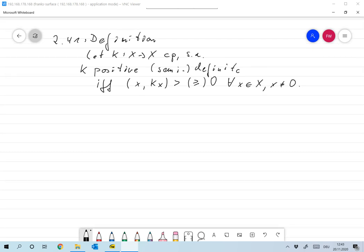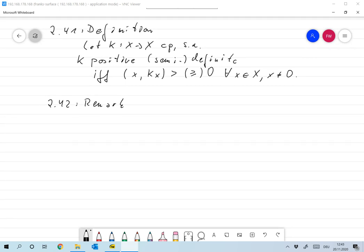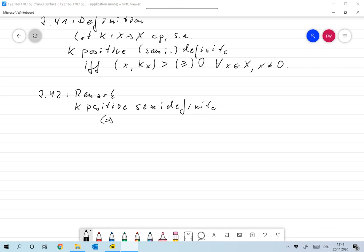Now let me give you an example 2.42. First of all that's a remark. First of all K is positive semi-definite exactly when all lambda, all eigenvectors lambda_k, and take the lambda_k for example from 2.40, greater or equal than 0.